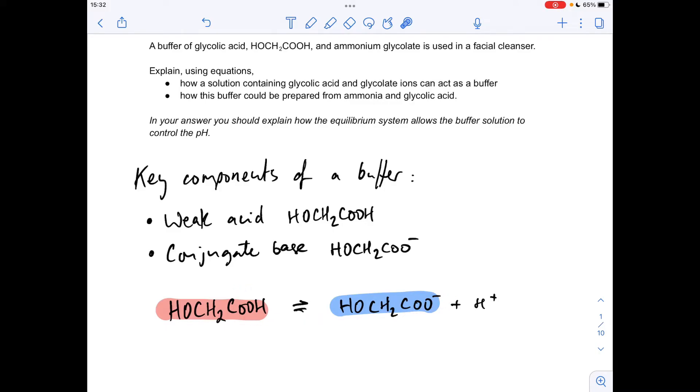So how does it act as a buffer solution? Well, if you add some acid, a small amount of acid, you're obviously increasing the H+ ion concentration. This reservoir of weak base—in the case of this buffer, it would be the glycolate ions—can accept the extra H+ ions and send the equilibrium over to the left-hand side.